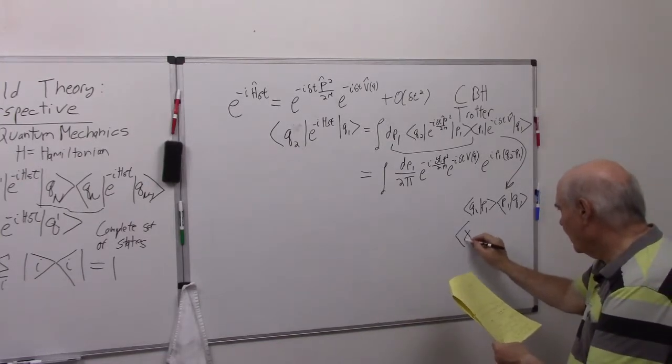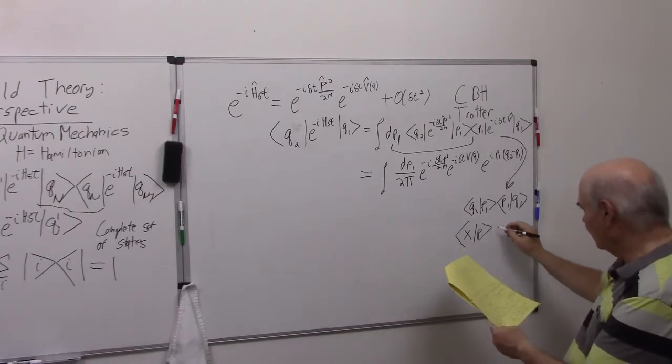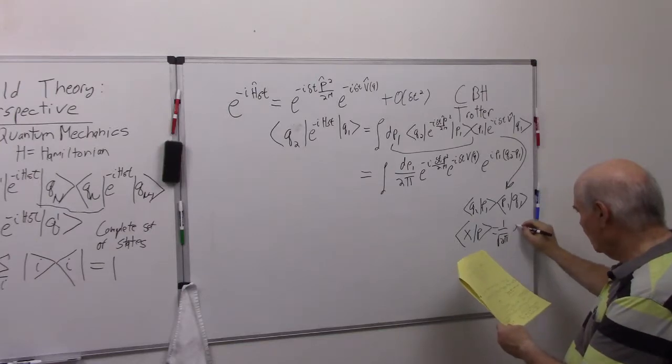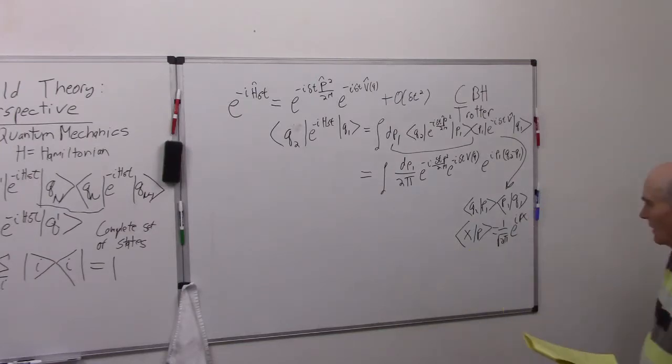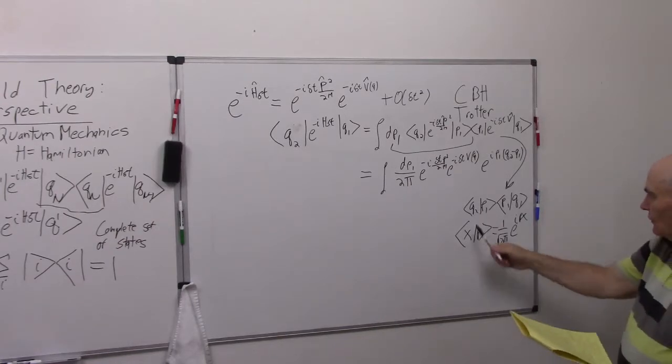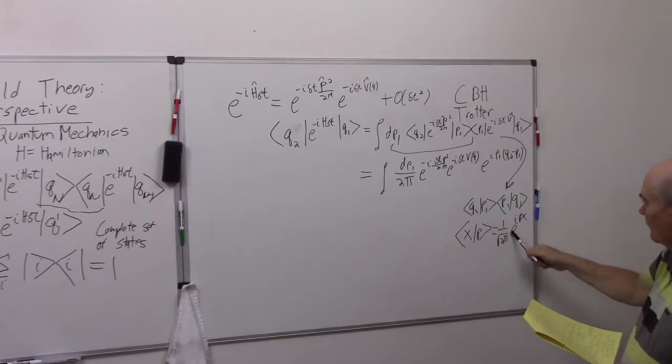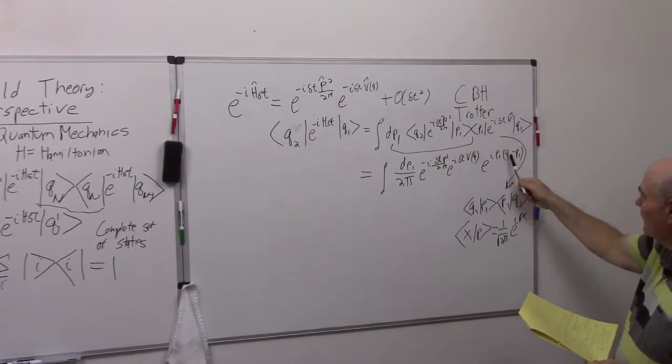The definition of a momentum eigenfunction is equal to 1 over the square root of 2 pi, e to the i px. So I'm just using q for x here. When you substitute this and this, you end up getting this. The 1 over the square root of 2 pi has become 2 pi.